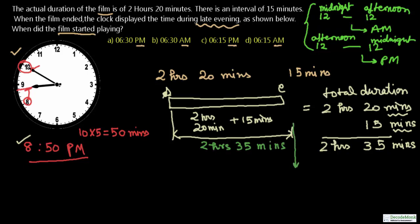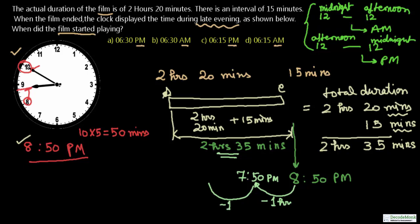We know the end time is 8:50 PM, and we need to go back 2 hours 35 minutes to find the start time. Going back one hour from 8:50 PM gives 7:50 PM. Going back another hour gives 6:50 PM. That accounts for the 2 hours. Now we still need to subtract the remaining 35 minutes.